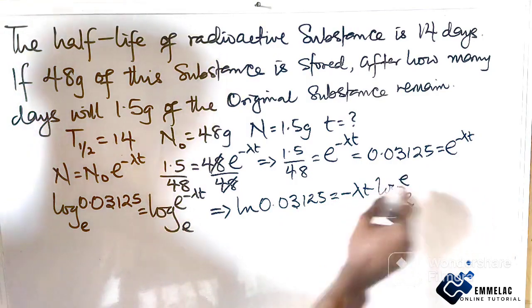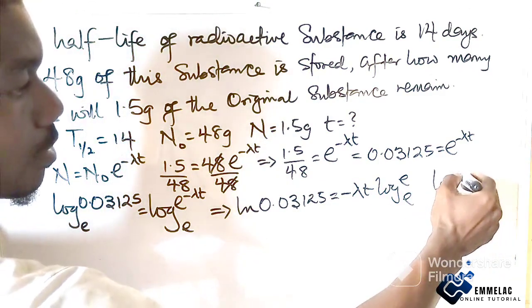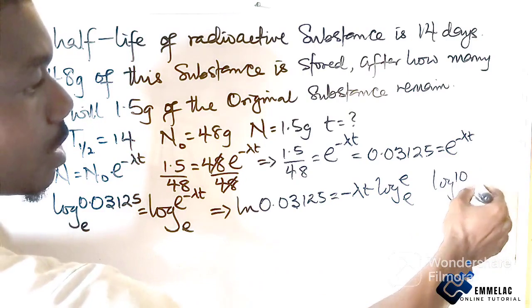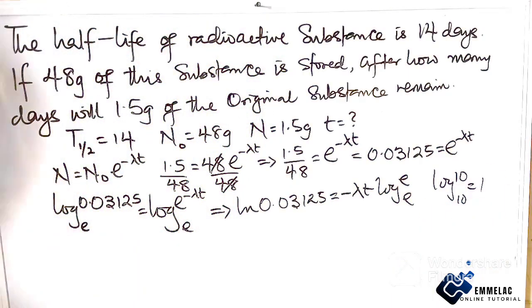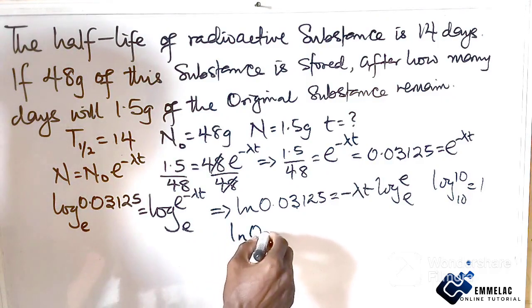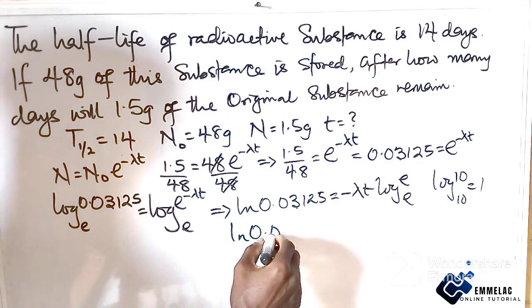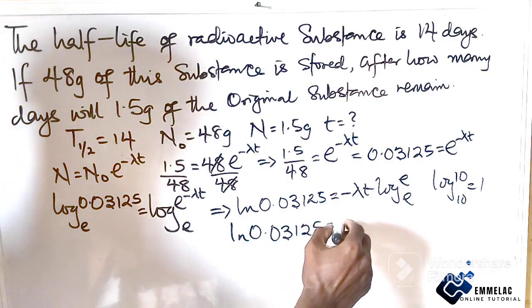We know in logarithm, log base 10 of 10 equals 1, it could also be x to x. And as such, we finally have the natural logarithm of 0.03125 equals -λt.